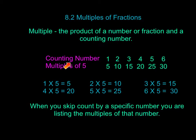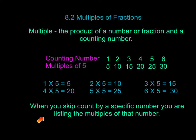Our counting numbers are just regular numbers: 1, 2, 3, 4, 5, 6, 7, 8, 9, 10, 11, 12 — you can go on and on and on. A multiple is then going to be basically counting by that specific number.